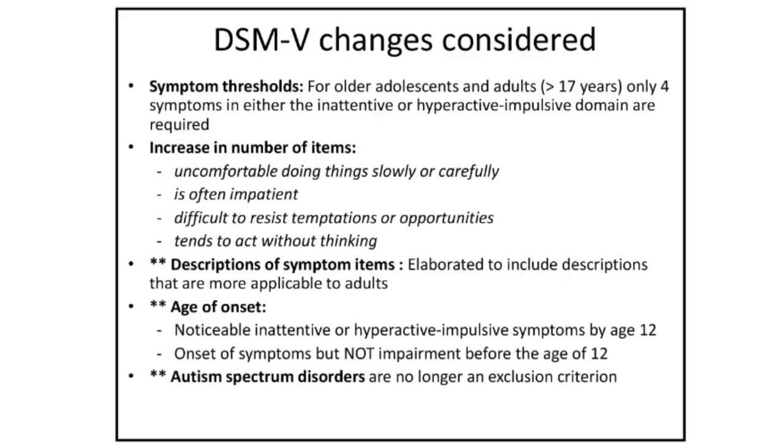Another area was the limited number of impulsivity items in the criteria, even though many adults present with a wide range of expressions of impulsivity. One reason hyperactivity and impulsivity appears to decline in adulthood may be because we're not accurately measuring it. The committee considered increasing the number of items but felt it was untested and unvalidated. What they did change was giving more adult descriptions of ADHD behaviours. UCAN was also on the verge of publishing a clinician's handbook with all the information needed about how ADHD presents and how to manage and treat it.